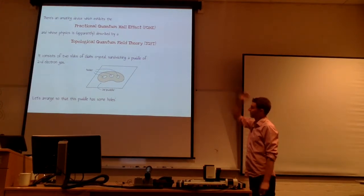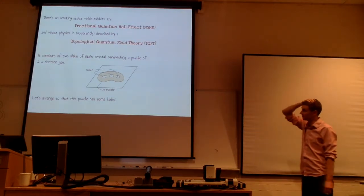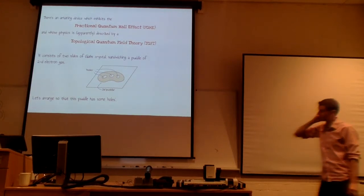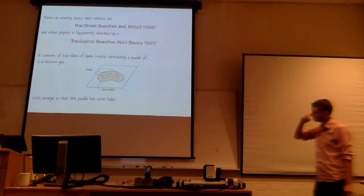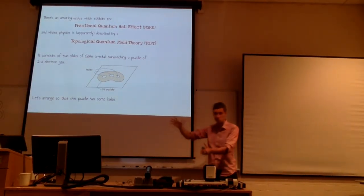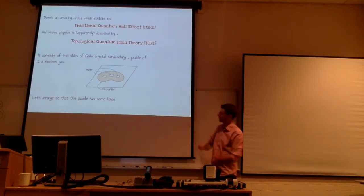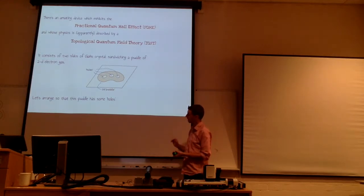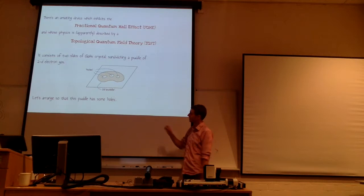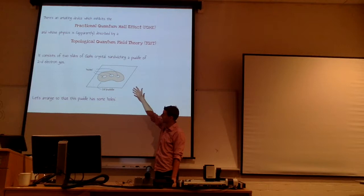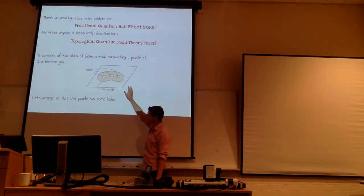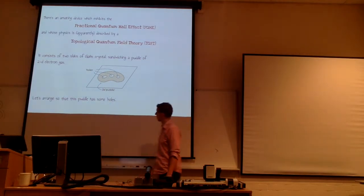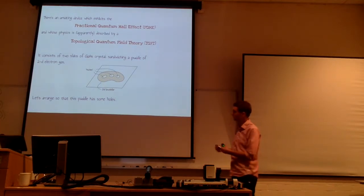I'm going to talk about a little bit of actual physics now — and I should say quantum mechanics really belongs to mathematicians, so this stuff now belongs to the physicists, and I'm giving a very idealized version. There's this amazing thing called the fractional quantum Hall effect, which physicists see in the real world. Its physics is apparently described by something called a topological quantum field theory. To get one of these fractional quantum Hall effect devices, you take two slabs of gallium arsenide, grow them very carefully with slightly different doping, and at the interface between the two slabs something very special happens.